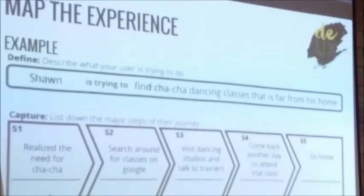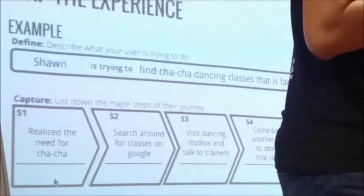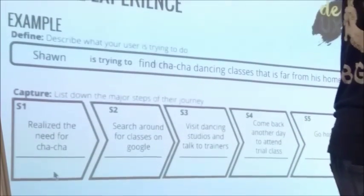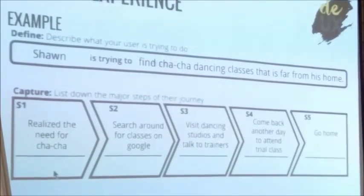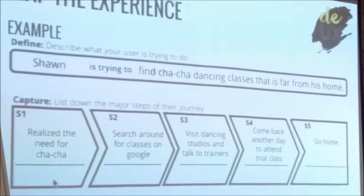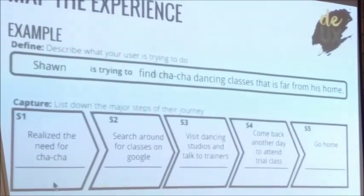A lot of teams choose going on a trip. Are you sure all their trips are the same? Are you sure they go through all the exact same things? They'll definitely be similar, because no matter what, you still go from point A to point B — that's the definition of a trip. But there's a reasoning behind it. Third stage: visit dancing studios and talk to trainers. Fourth stage: come back another day to attend the first class, a trial class. Fifth stage: actually going home.